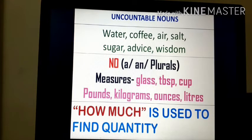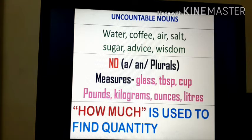With uncountable nouns, a, an or plural is not used, but we can use units to talk about quantity. For example: give me a glass of water; give me two tablespoons of sugar; give me a cup of rice; give me two kilograms of sugar; give me two liters of mustard oil. 'How much' is used to find the quantity in uncountable nouns.